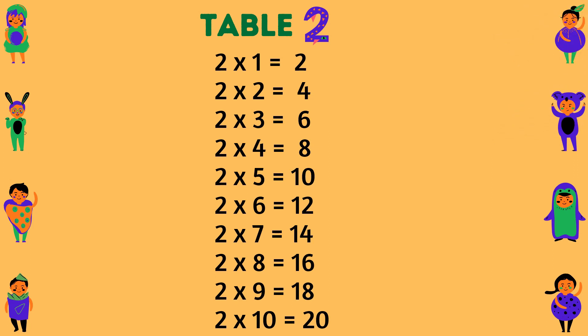Table of 2. 2 times 1 equals 2. 2 times 2 equals 4. 2 times 3 equals 6. 2 times 4 equals 8. 2 times 5 equals 10. 2 times 6 equals 12. 2 times 7 equals 14. 2 times 8 equals 16. 2 times 9 equals 18. 2 times 10 equals 20.